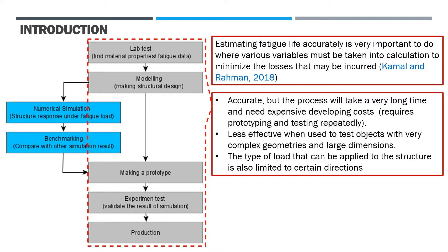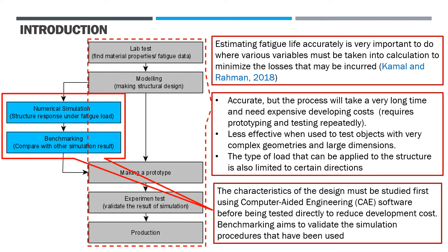The experimental method by conducting direct testing can be used to determine fatigue life in a structure. This method has the advantage that the results obtained are very accurate and close to the real value under original conditions. However, the process will take a very long time and development costs will be very expensive because the process requires prototyping and testing repeatedly. The characteristics of the design must be studied first using computer-aided engineering software before being tested directly to reduce development costs. Benchmarking aims to validate the simulation procedures that have been used.